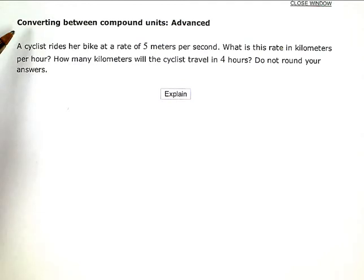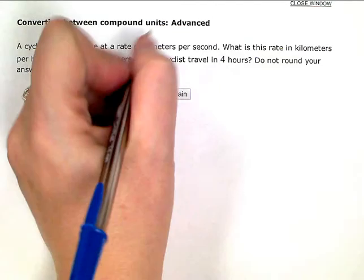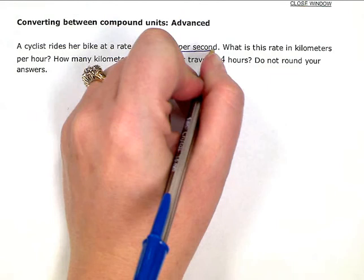Converting between compound units advanced. A cyclist rides her bike at a rate of 5 meters per second. So there's my beginning rate, 5 meters per second.